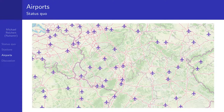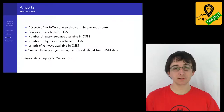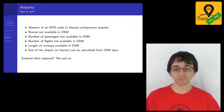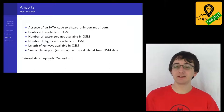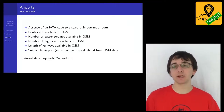Now let's look at airports and how to sort them by rank or importance. The absence of an IATA code to discard unimportant airports doesn't work well enough — too many airports remain for low map scales. Routes are not available in OpenStreetMap and are unlikely to be mapped due to verification difficulties. Passenger numbers are not in OpenStreetMap and are hard to keep current. However, the length of runways and the area of an airport in hectares can be calculated from OpenStreetMap data.